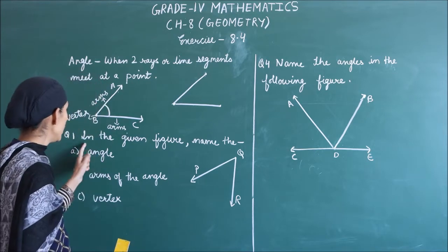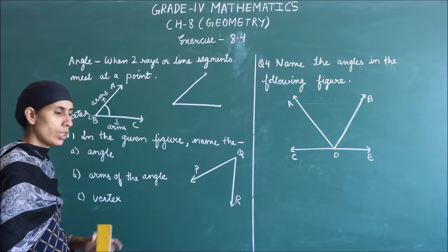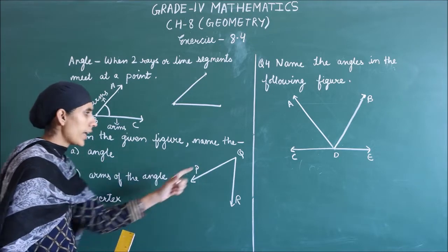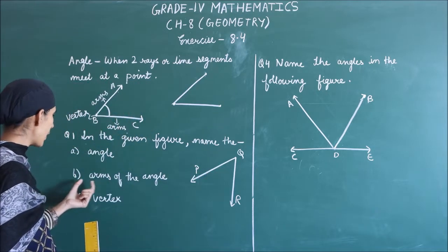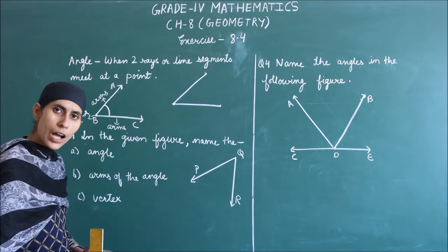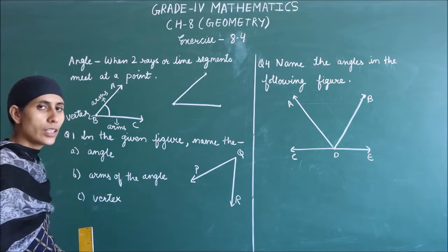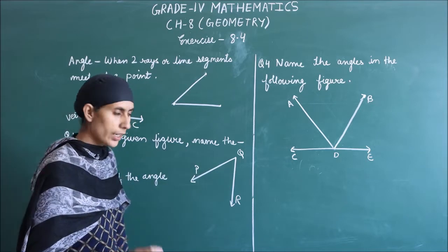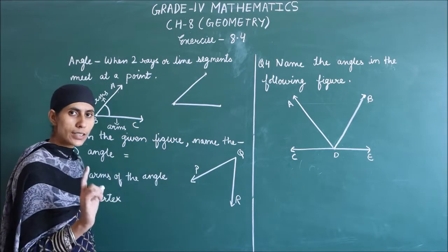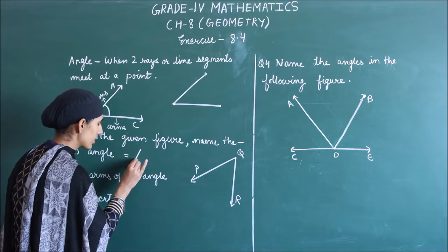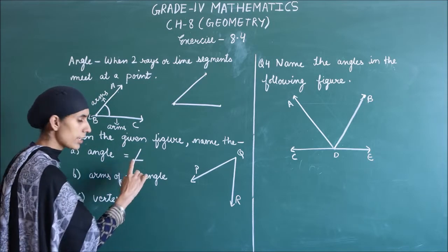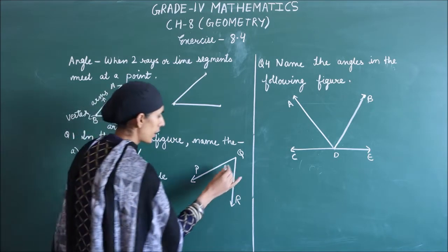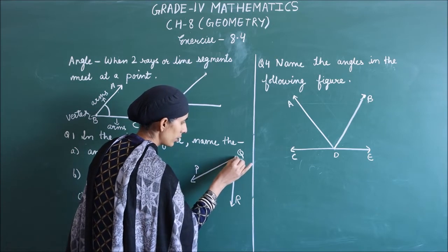Now let's go to the exercise. Question 1: In the given figure, name the angle. So how do we call the angle? First, we call the symbol. This is the symbol of angle. Now the angle, where is the vertex here? This point.